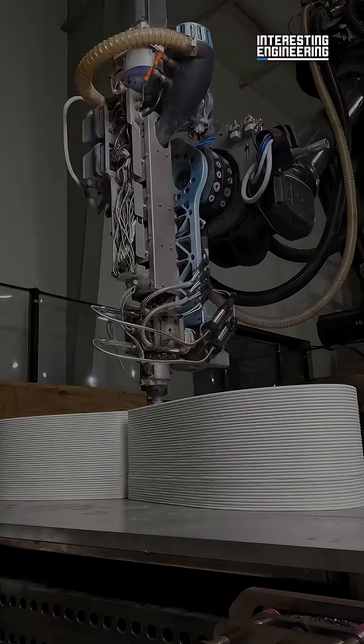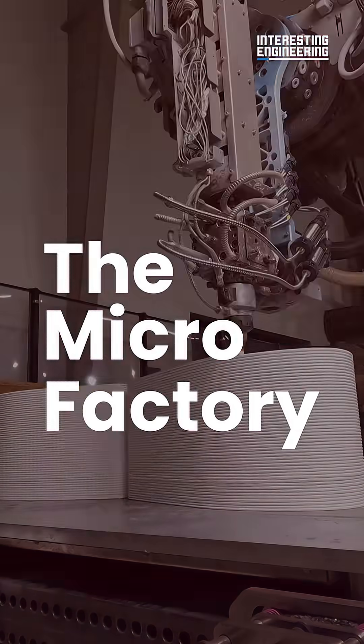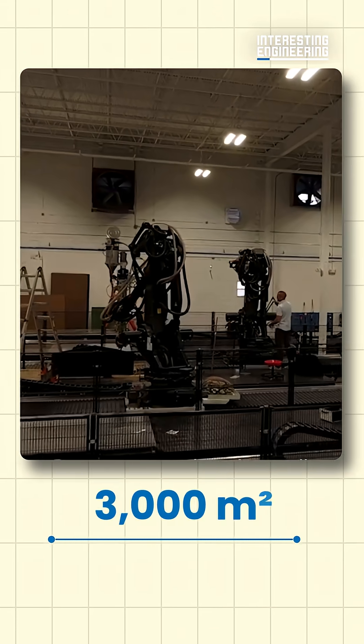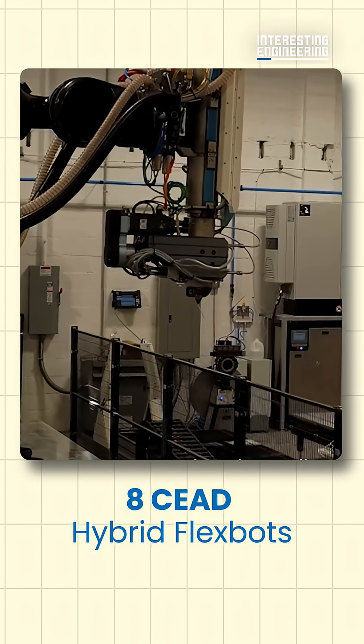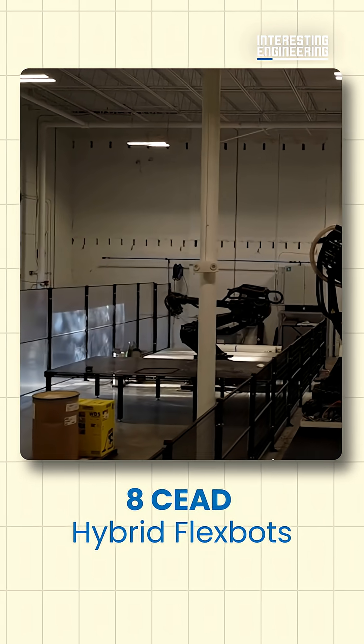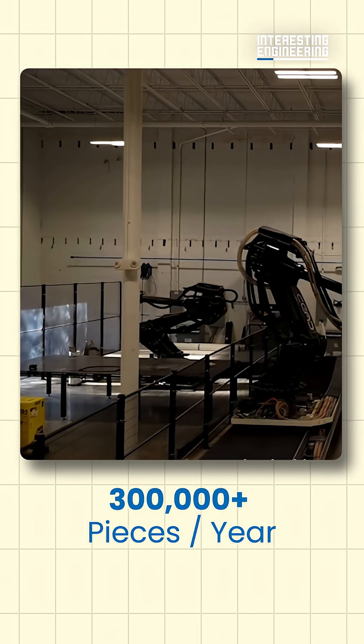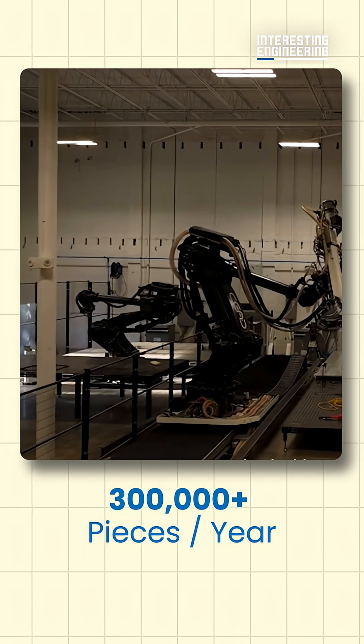Its name, the Microfactory. It measures 3,000 square meters and houses a team of eight Seed hybrid flexbots. Together, these robots are capable of producing up to 300,000 3D printed pieces per year.